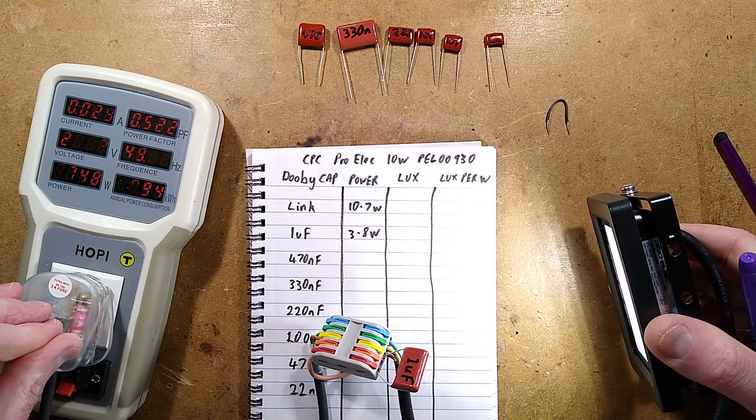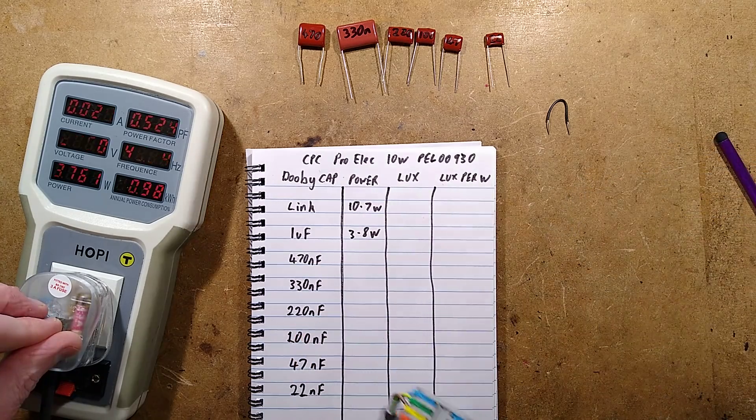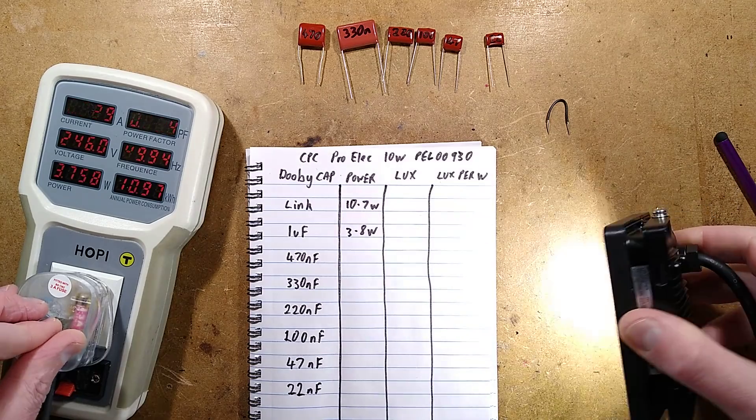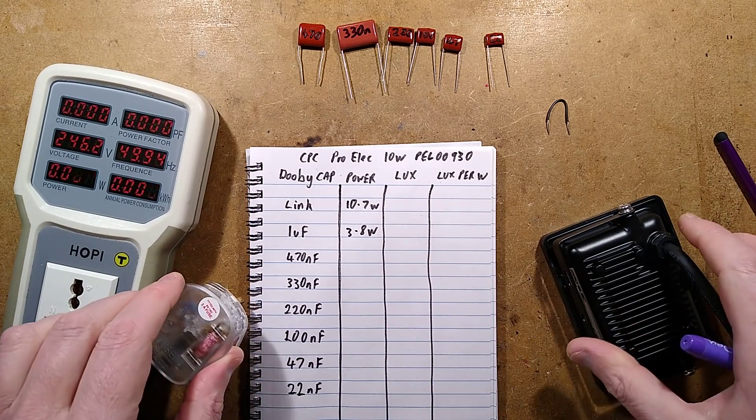Okay, I could measure. The power factor is probably going to remain constant across this. Okay, that's still pretty bright. That is, shine that across the room, that's still ample light. But that is already more than halved the power dissipation of this.